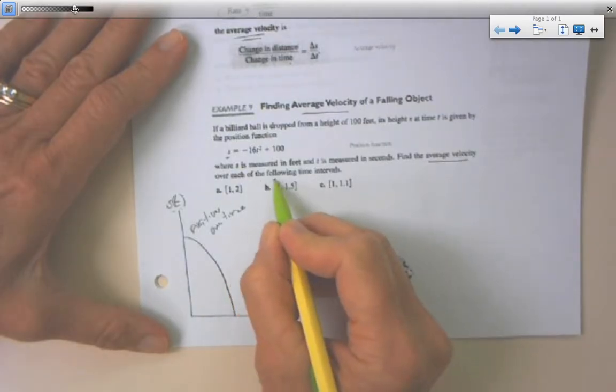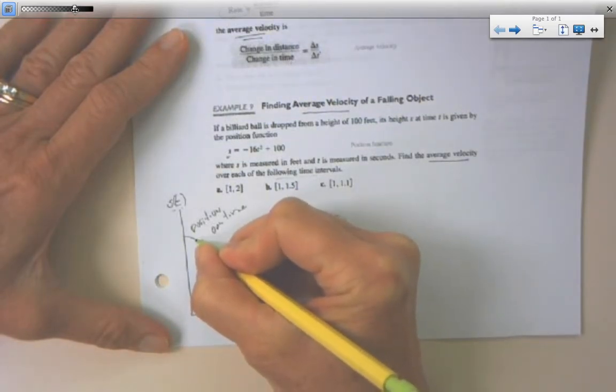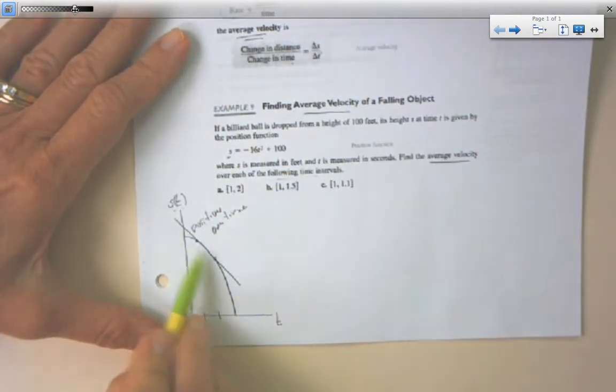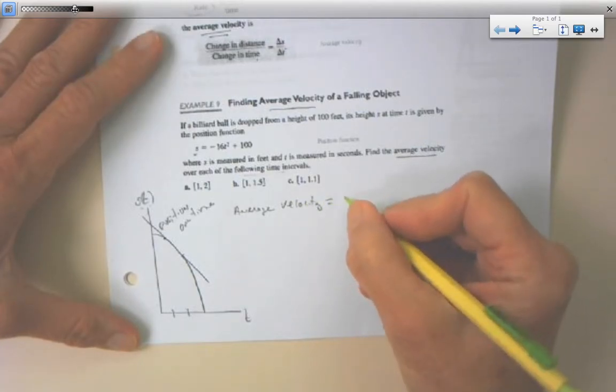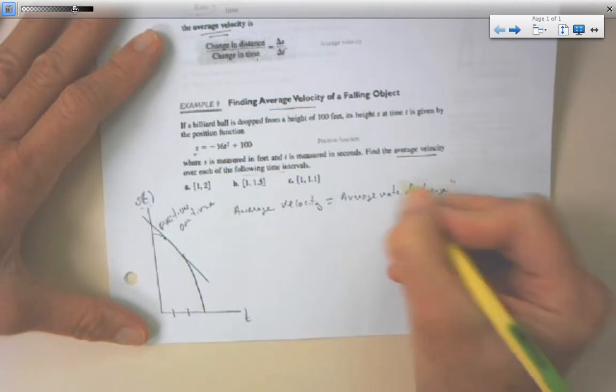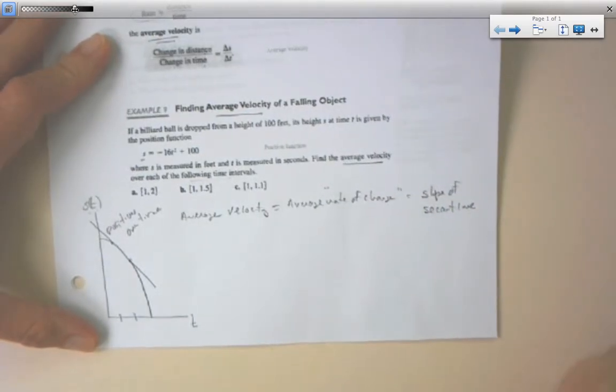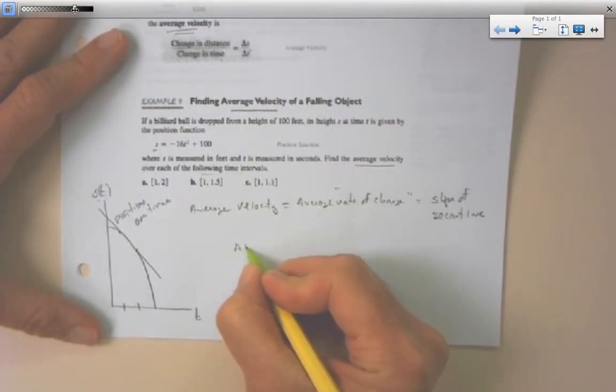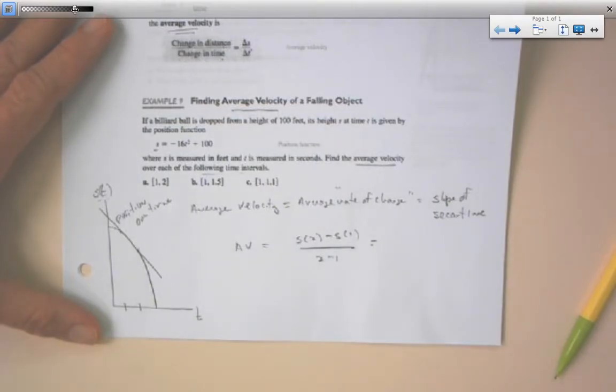We're going to find the average velocity over the falling time intervals. If I'm going to find the average velocity between position at 1 and position at 2, that means I'm going to find the slope of this line that goes through two points. Average velocity is the same as average rate of change, which is the same as the slope of the secant line. So let's find average velocity: av equals s of 2 minus s of 1 over 2 minus 1.